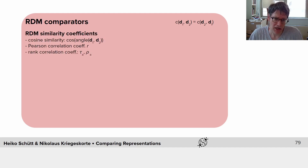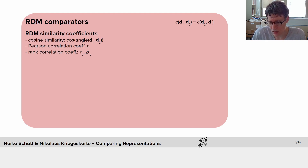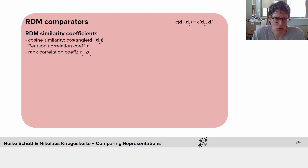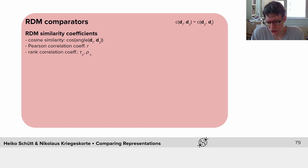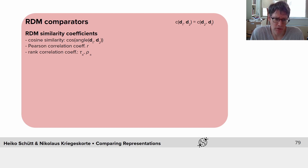We can use simple similarity coefficients to compare two RDMs — for example, the cosine similarity, the Pearson correlation coefficient, or the rank correlation coefficient. These give us different invariances. If all we care about is the ranks of the dissimilarities, and we want to consider two representations identical if those ranks are the same, we'd use the rank correlation coefficient — for example, Spearman's rho or Kendall's tau. If we want the relationship to be linear, we'd use the Pearson correlation coefficient, and if we want one to be a scaled version of the other, we'd use the cosine similarity.